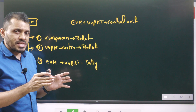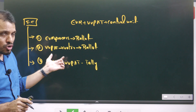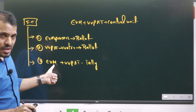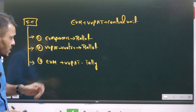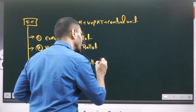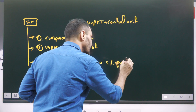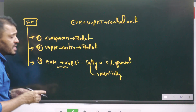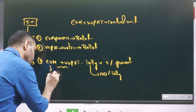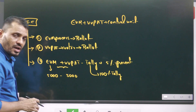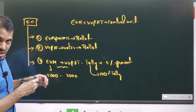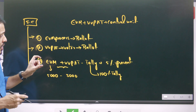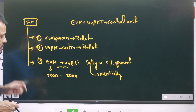The third request concerned EVM and VVPAT tally. At present, in any assembly election, five EVMs and their respective VVPATs are randomly picked and tallied — that is a five percent tally. The petitioners requested 100% tally, meaning if 5,000 EVMs are used in a constituency, all 5,000 EVMs should be tallied with their respective VVPATs to verify that votes cast match what is recorded.